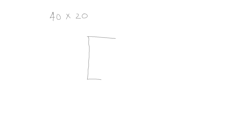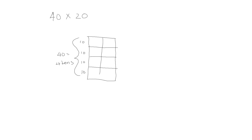Let's go on to another problem. This time we're going to look at 40 times 20, and we're going to show it in an area model. We're going to show 40 as 4 tens, and here we have 2 tens, which is 20. Each of the little squares is 10 times 10, which is 100. So we're finding the area of each separate rectangle, and we see that we have 8 hundreds.